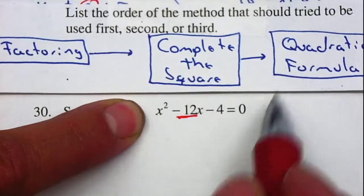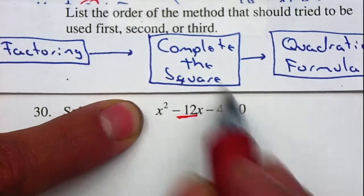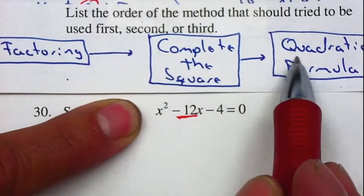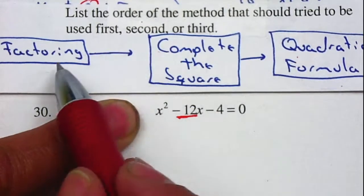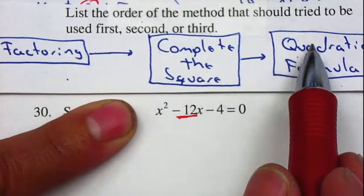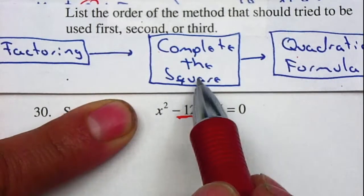Now if you use the quadratic formula, you'll get the same answer, but remember that you have to use each method once. We already used factoring, we already used the quadratic formula, so we have to use completing the square.